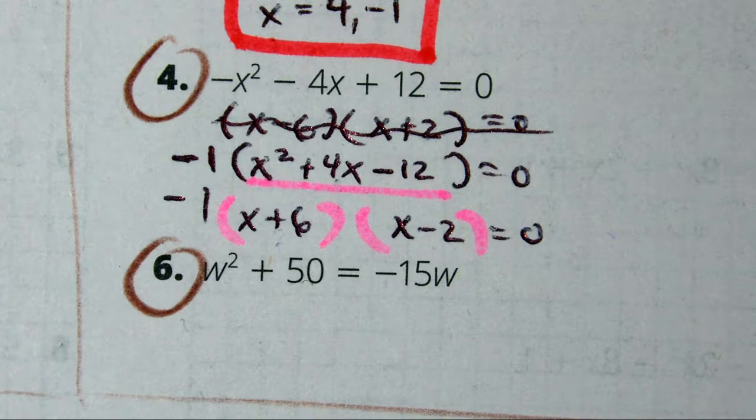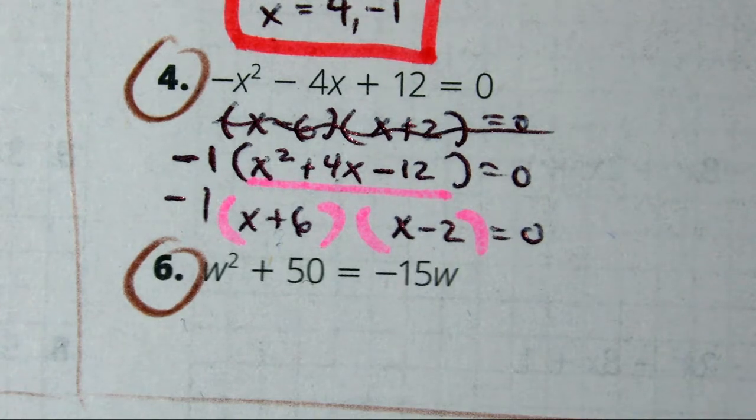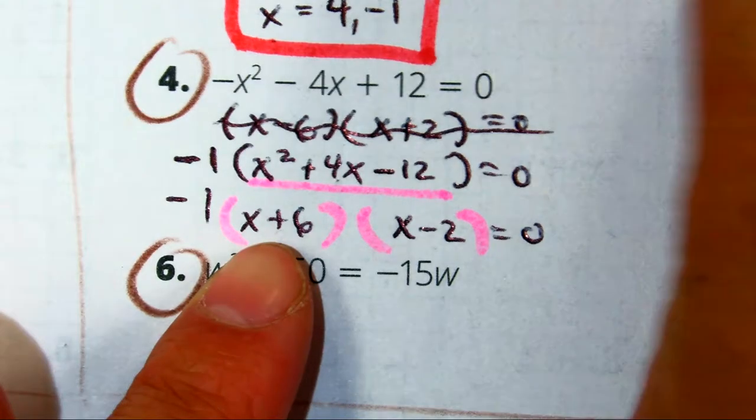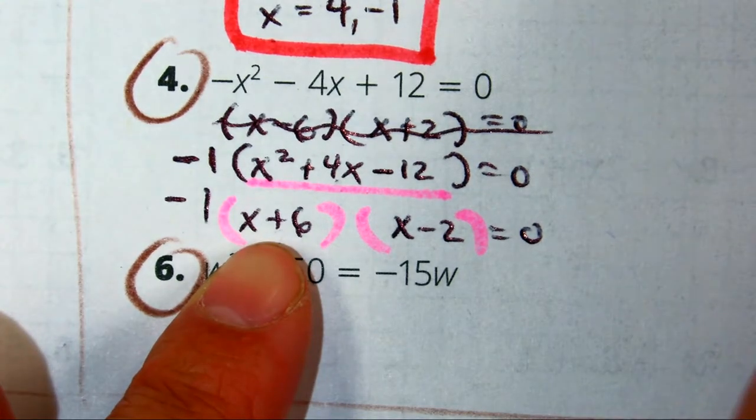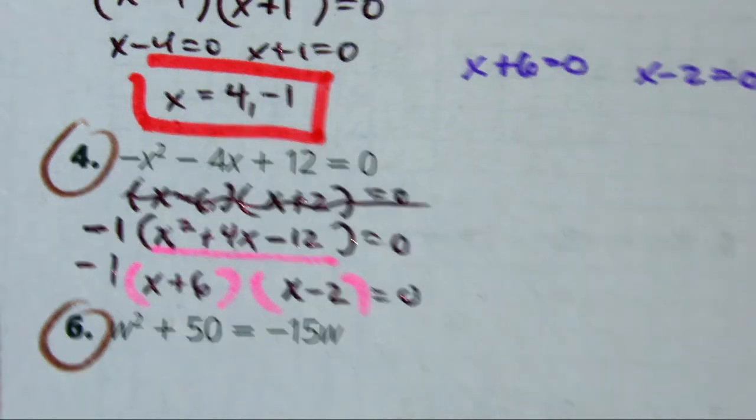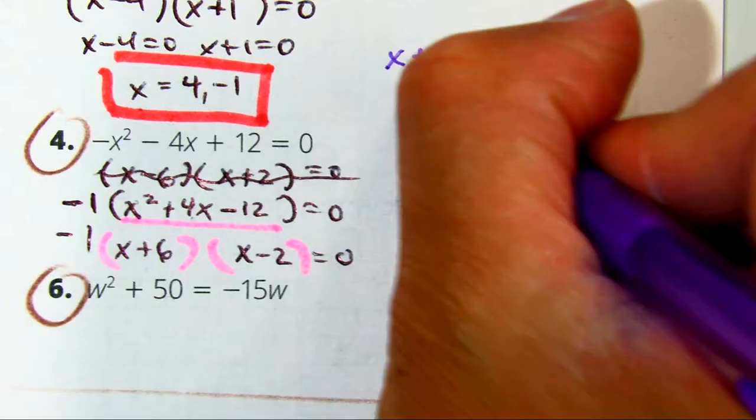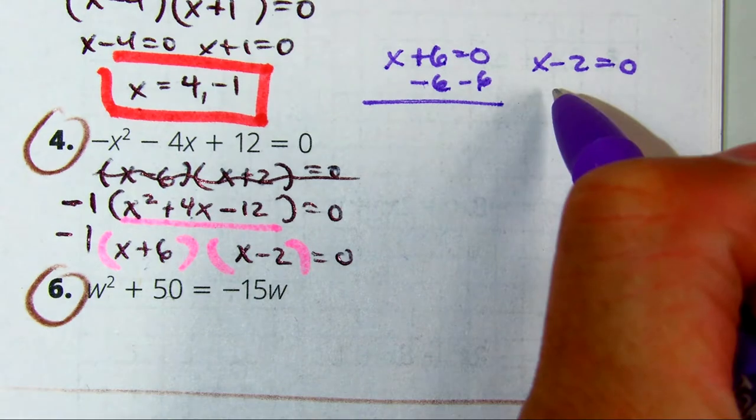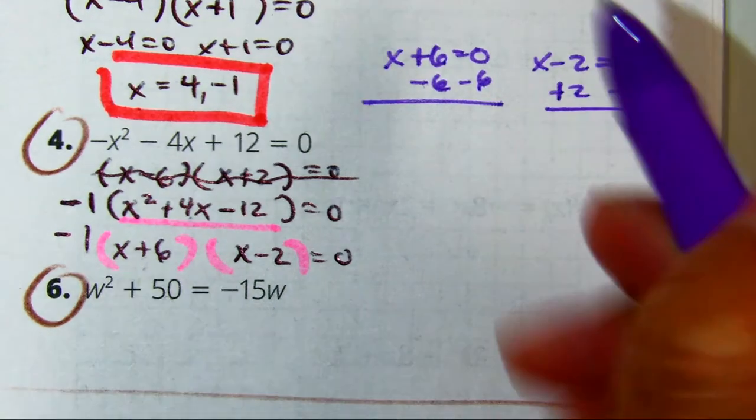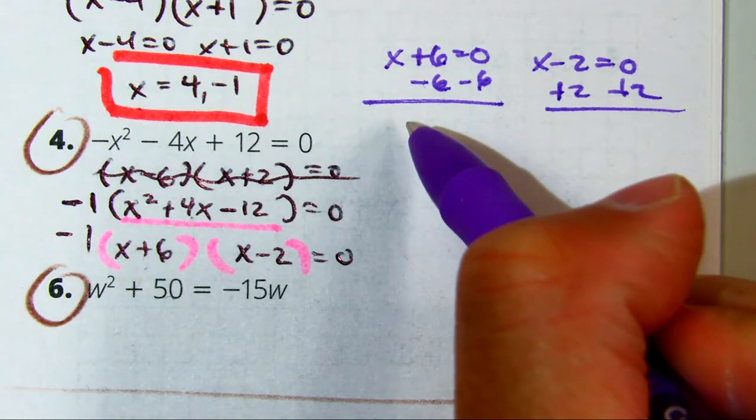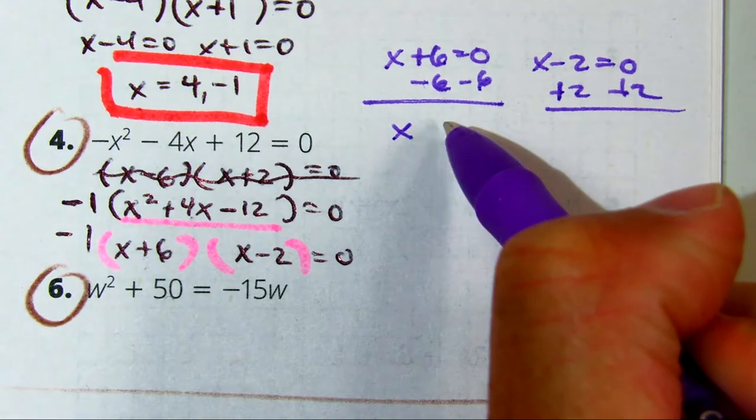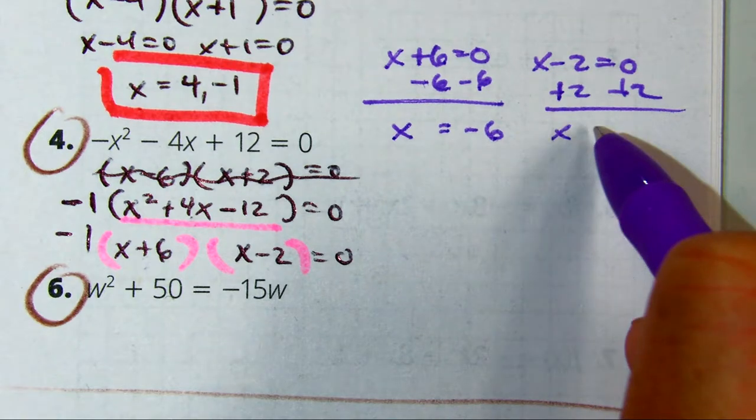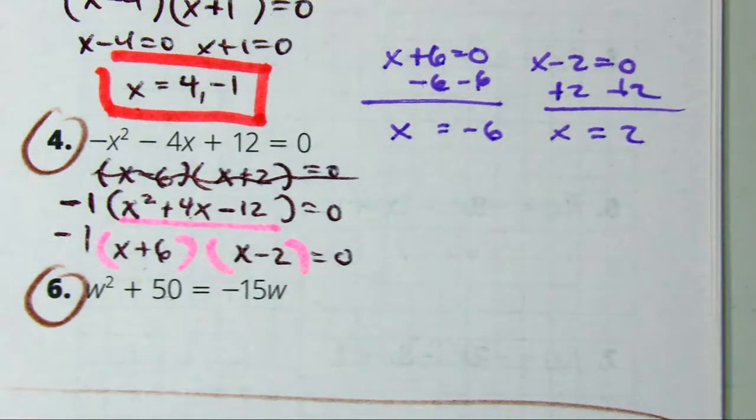So, you already have 0, and once you get the positive 6, you have to subtract it. So, x plus 6 equals 0, and x minus 2 equals 0. So, you have to subtract the 6. Raise your hand if you got those as your two answers.